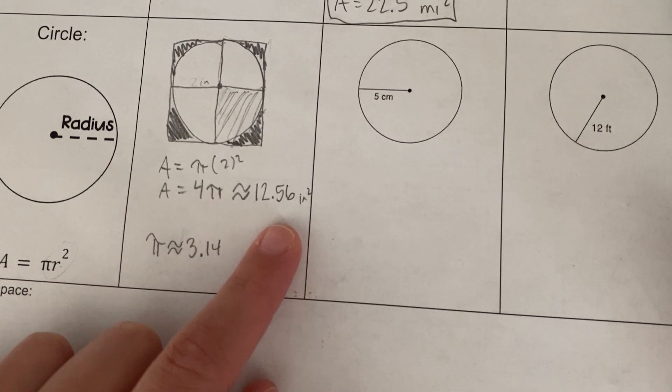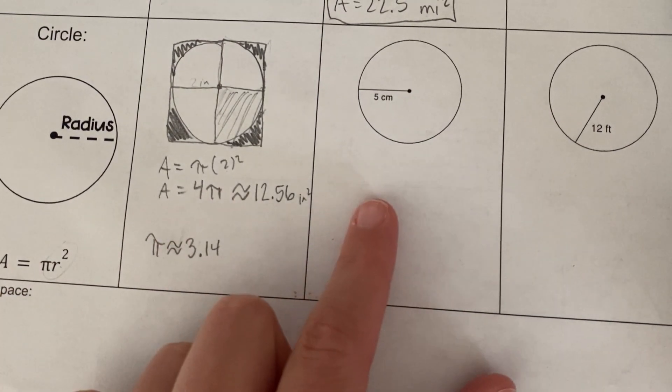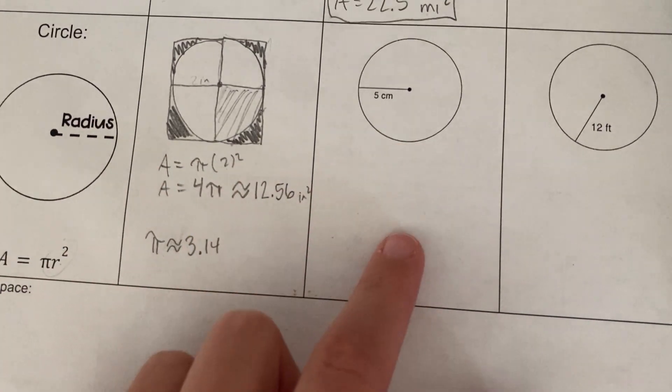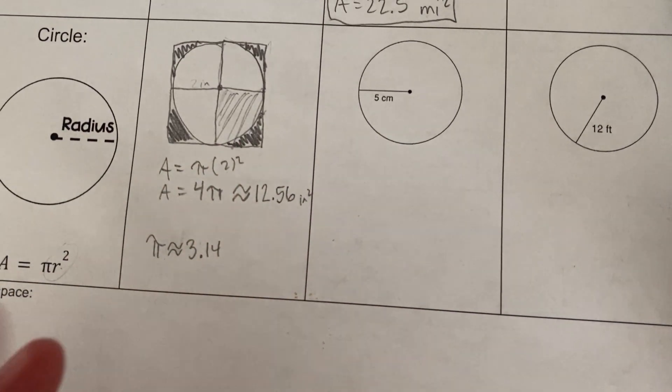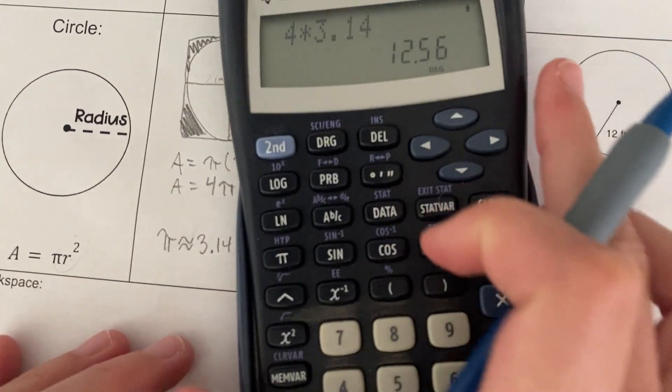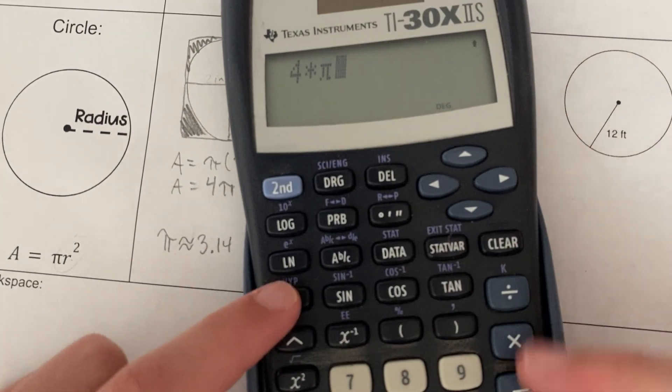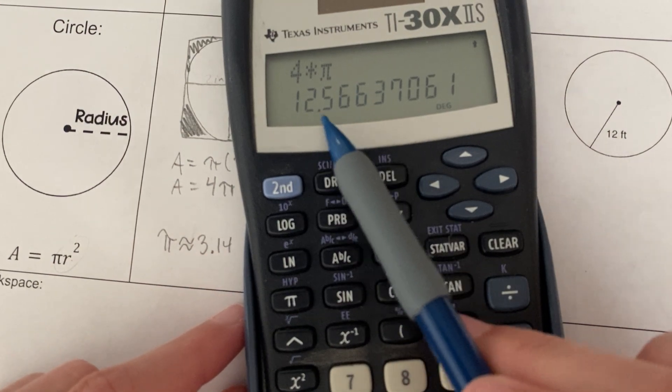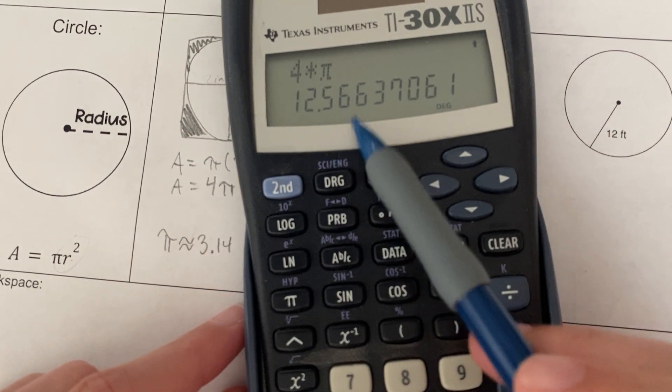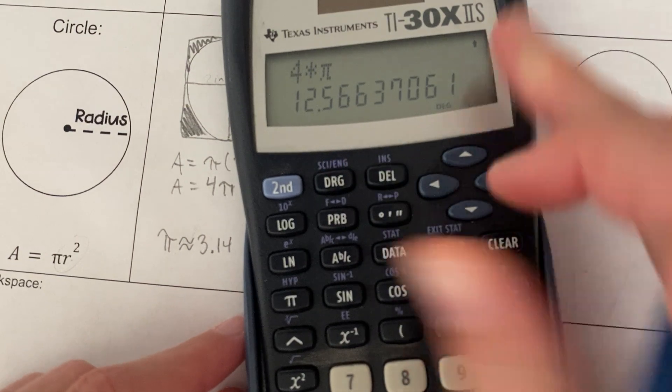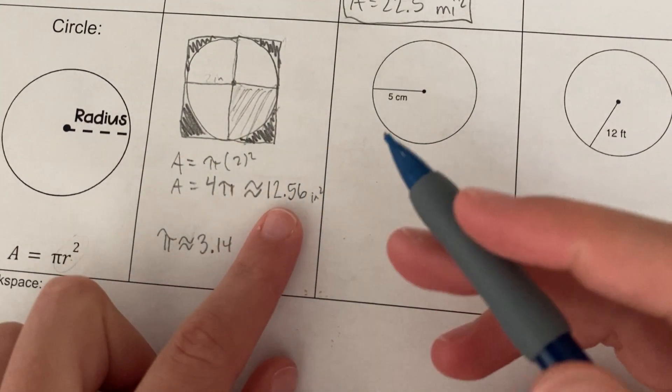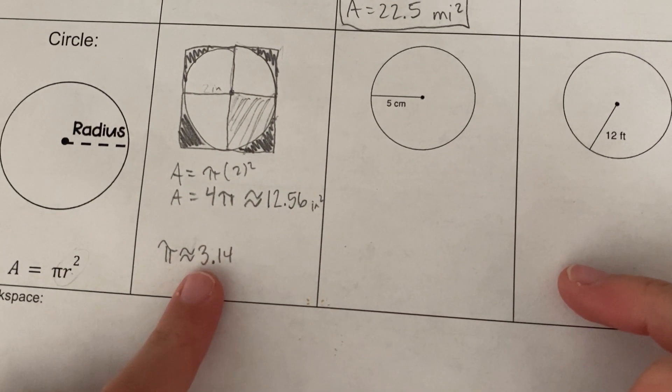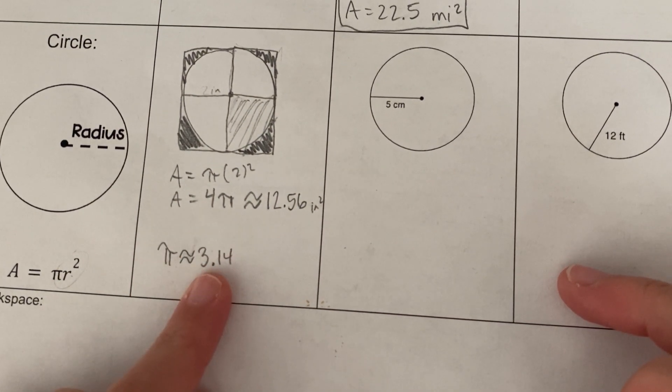Okay, so you just have to read the directions on whatever problem. Sometimes it'll say give your answer in terms of pi. Sometimes it'll say round your answer to the nearest hundredth as a decimal. For here, I'm going to ask you to do both so that way you have the capacity to do both. There is a pi button. So like, look, I could do 4 pi. This would technically round to 12.57. Technically, this is more accurate, but just read the directions because often it'll say, like, in, let's say you're doing an iXL, it'll say use 3.14 for pi. And then that's what you'll do.